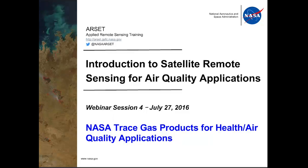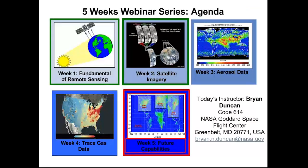Welcome back everybody. This is session 4 of the webinar series on introduction to satellite remote sensing for air quality applications. Today we are going to talk about trace gas products and their application for health and air quality. Just to give a quick overview of the agenda: week one covered fundamentals of remote sensing, week two covered satellite imagery and how to get the data, last week we learned about aerosols data for PM2.5 and air quality applications, and today we talk about trace gas data.